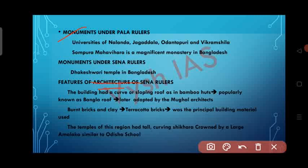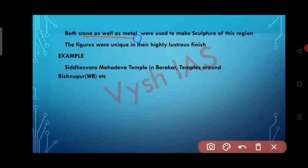Features of Sena architecture include: buildings with a curved or sloping roof as in bamboo huts, popularly known as the Bangla roof, which was later adopted by Mughal architecture; burnt brick and terracotta bricks as the principal building materials; temples with a tall curving Shikara crowned by a large Amalaka, similar to the Odisha school; and sculpture made in both stone and metal, with figures unique in their highly lustrous finish. Examples include Sindeshwara Mahadeva temple and temples around Vishnupur in West Bengal.